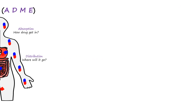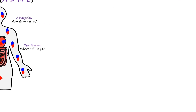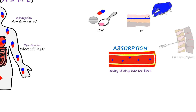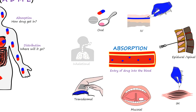Let's start with absorption. Absorption is the process by which a drug enters the bloodstream from the site of administration. The way a drug is administered impacts how well it is absorbed. For example, an intravenous injection goes straight into the blood, while oral medication has to dissolve in the stomach first. Let us look into some routes of drug administration and how they affect absorption.